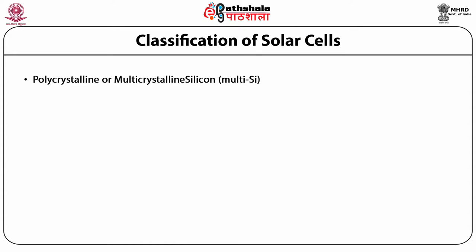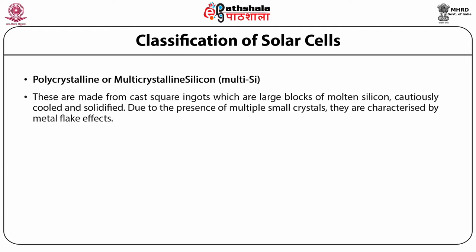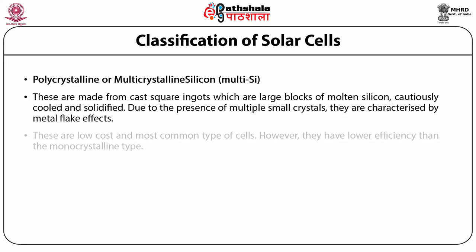Polycrystalline or multicrystalline silicon (multisilicon) is also used for development of solar cells. These are made from cast square ingots, which are large blocks of molten silicon carefully cooled and solidified. Due to the presence of multiple small crystals, they are characterized by a metal flake effect. These are low cost and most common type of cells. However, they have lower efficiency than the monocrystalline type.